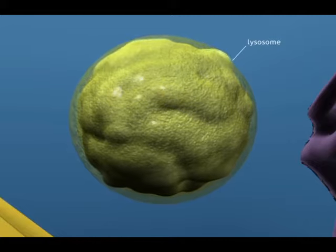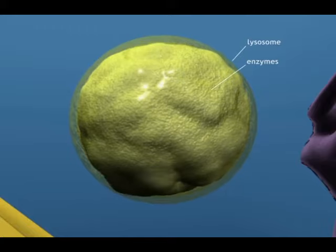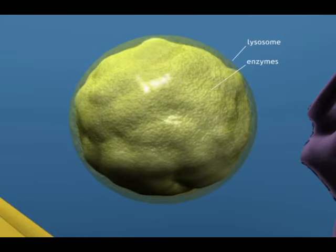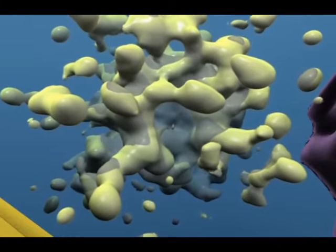Here you can see a lysosome, an enzyme-containing organelle, as it is digesting an old, worn-out organelle. The membrane surrounding the digestive enzymes is necessary as a barrier between the digestive enzymes and the rest of the cell.